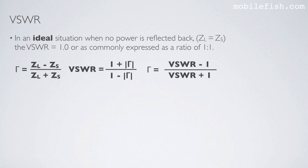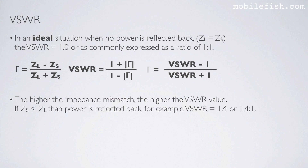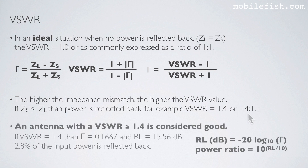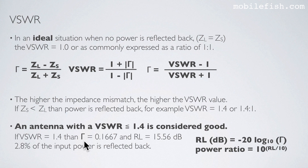In an ideal situation, when no power is reflected back, the load impedance and the source impedance are the same. The VSWR will be 1, or commonly expressed as a ratio of 1 to 1. The higher the impedance mismatch, the higher the VSWR value. For example, a VSWR of 1.4, or 1.4 to 1, means the reflection coefficient is 0.1667 and the return loss is 15.56 dB, meaning 2.8% of the input power is reflected back.